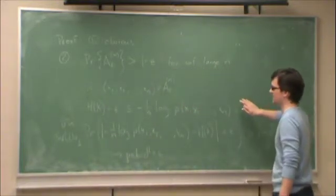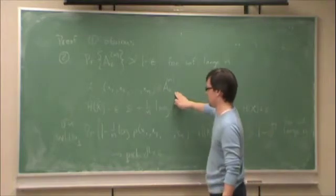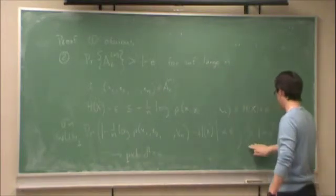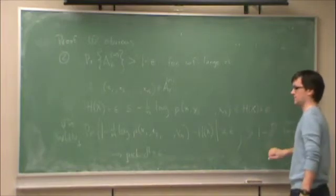So what have I done? Basically, I've said if the sequence is in the Typical Set, then this is true. And the probability of that being true is greater than one minus epsilon.